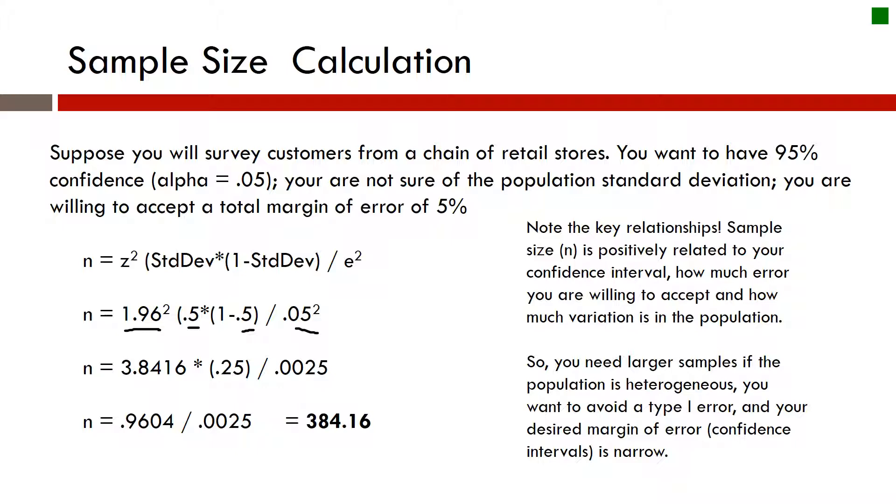Note some key relationships here. Sample size is going to be positively related to our confidence interval, how much error you're willing to accept, and how much variation is in the population. So that's a big deal. So you need a larger sample if your population is very heterogeneous. You want to avoid the type 1 error, and your desire of margin of error is narrow.